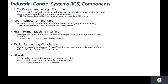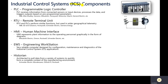Here are some of the components within the OT network, or the industrial control system — the ICS components. You have a PLC, or Programmable Logic Controller. These are devices that receive information from sensors or input devices, process the data, and trigger output based on pre-programmed parameters. There are a number of vendors that provide PLCs: ABB, Allen Bradley, Siemens, Mitsubishi, Honeywell, and the list goes on.